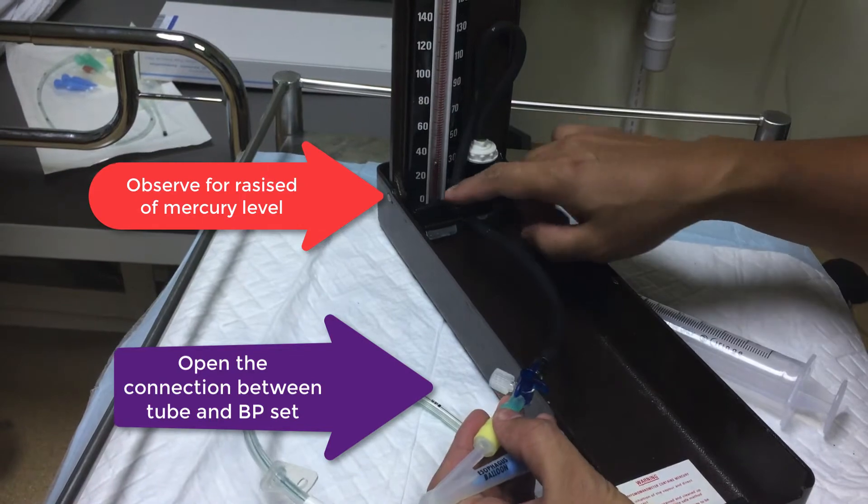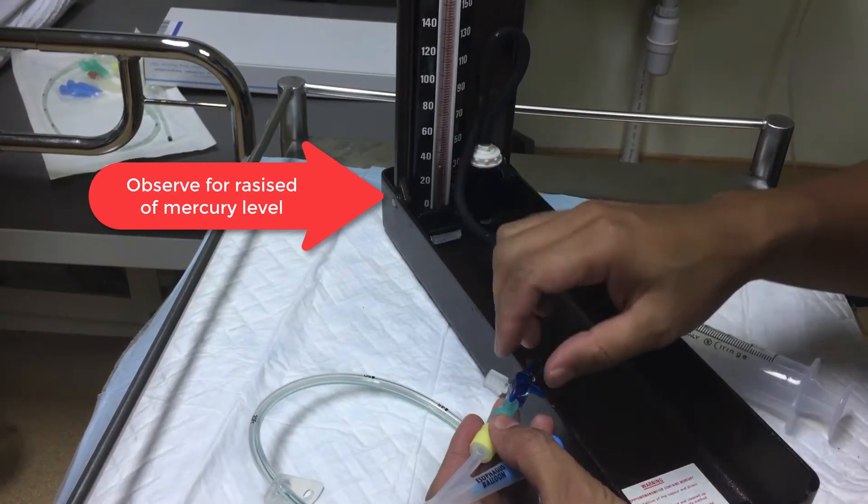When you open up the connection, you can see the mercury at the BP set start to rise.